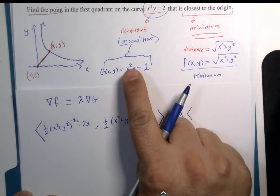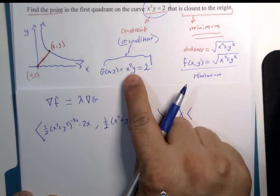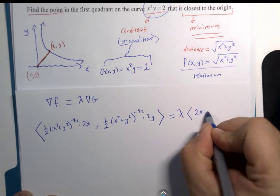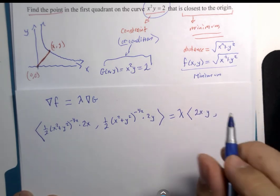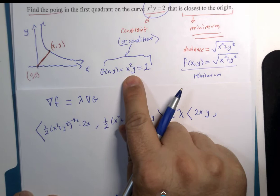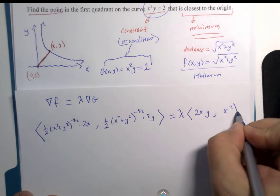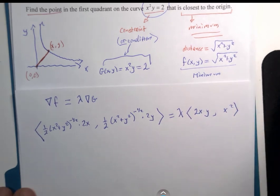That's supposed to be equal to lambda times. So, what is the x partial derivative of this? Well, that's right. It's 2x multiplied by y. And then what's the y partial derivative of this? That's also correct. Just x squared.